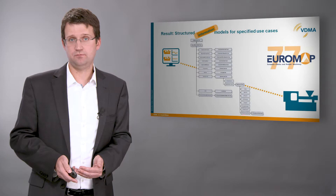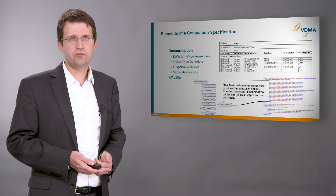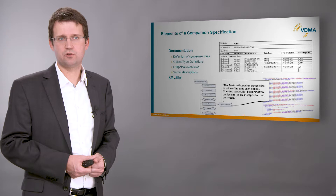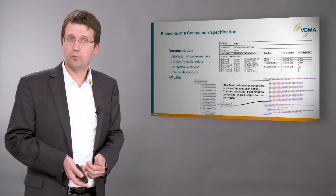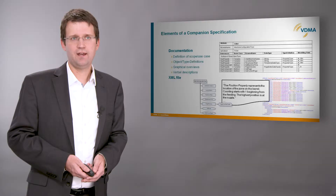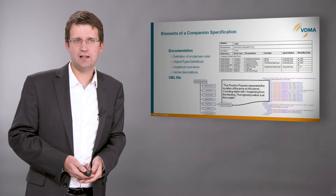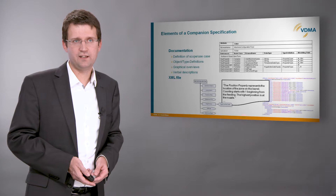When a companion specification is published, it consists of several elements. The first thing is always a clear definition of the concerned machine and the use case. The object types, methods, and events are formally described in standardized tables. These are accompanied by graphical overviews and verbal descriptions explaining the meaning of the described parameters. As a machine-readable component, for each companion specification an XML file with a model is provided. This can be used by developers for the creation of OPC UA servers and clients.